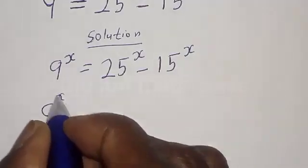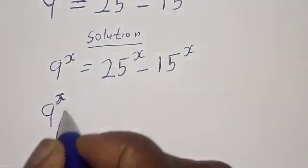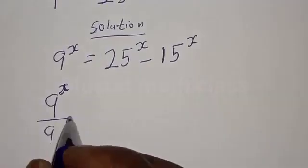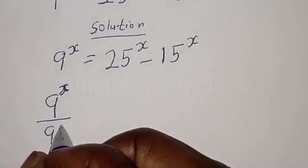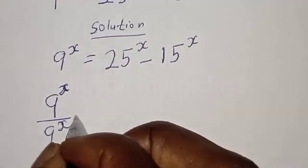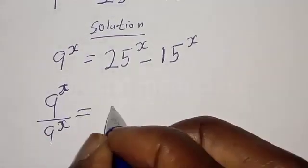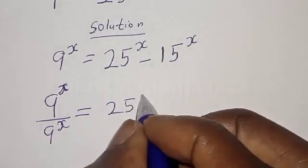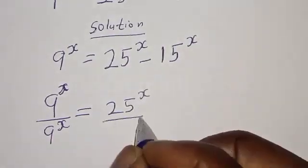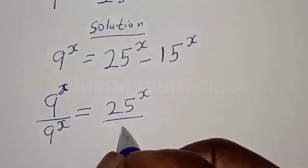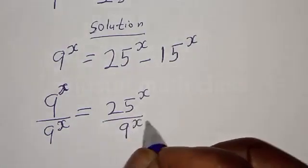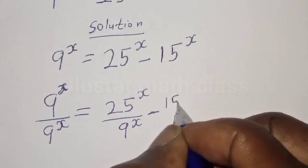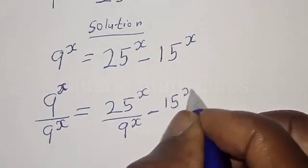Dividing through by 9 raised to power s, we have: 9 raised to power s divided by 9 raised to power s is equal to 25 raised to power s divided by 9 raised to power s, minus 15 raised to power s divided by 9 raised to power s.